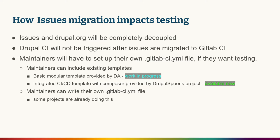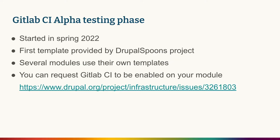Maintainers have two options. One, a maintainer can include existing templates — there's going to be one template provided by the DA, which is a work in progress, and there's also the advanced Drupal Spoons CI/CD template that includes Composer and integration with local instances, available now and you can try it anytime. The second option is maintainers can write their own GitLab CI file completely, and some projects are already doing this.